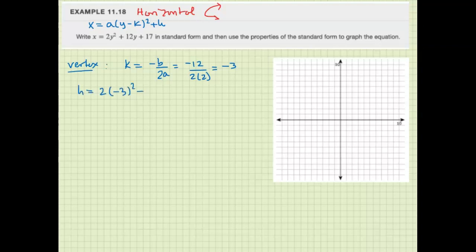2 times negative 3 squared plus 12 times negative 3 plus 17. We have 9, 18 minus 36 plus 17. Negative 18 plus 17 is negative 1.